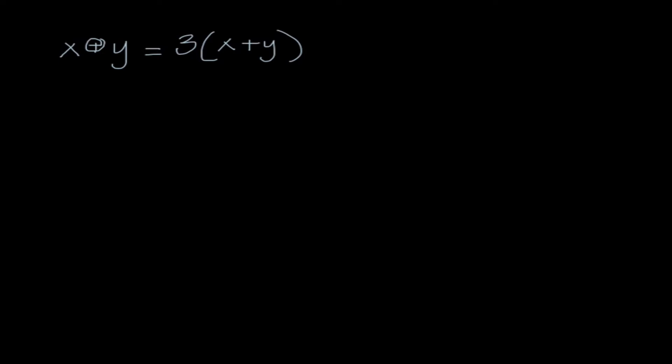Now I want to look at our favorite — we call it star, but I'm using a different symbol here, circle plus, just to show it's a symbol we don't know. There are four questions you'd need to answer. The first is something like 2 circle plus 3. We substitute 2 in for x and 3 in for y, giving us 3 times the quantity 2 plus 3, which is 3 times 5, which is 15.